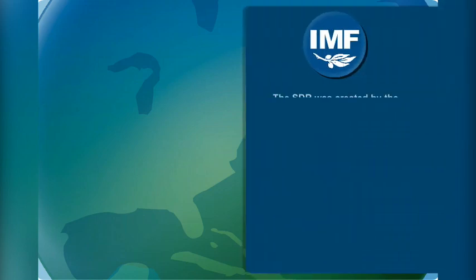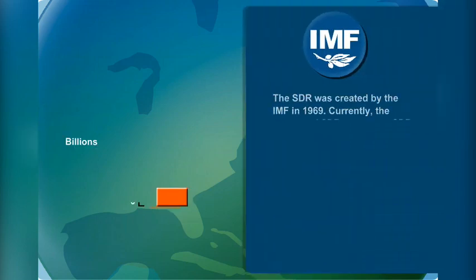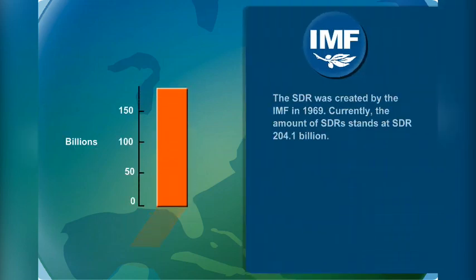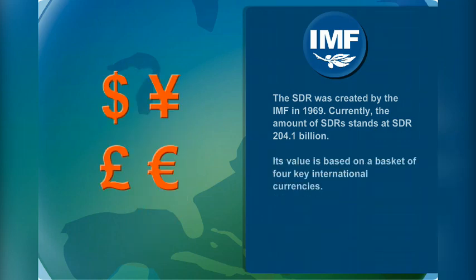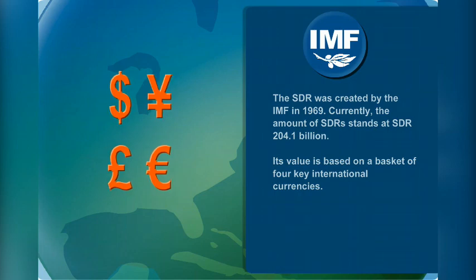The SDR was created by the IMF in 1969. Currently, the amount of SDRs stands at just over $204 billion. Its value is based on a basket of four key international currencies: the US dollar, Japanese yen, British pound, and the euro.